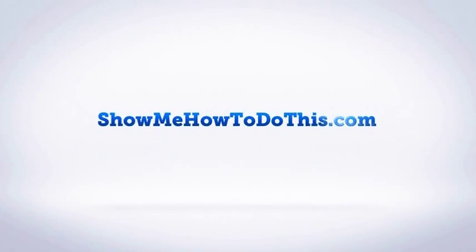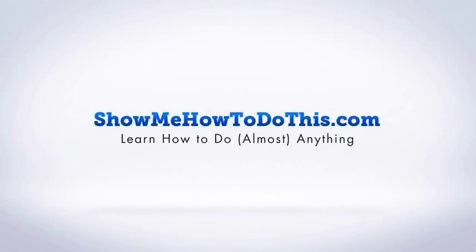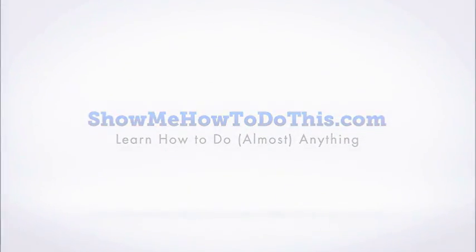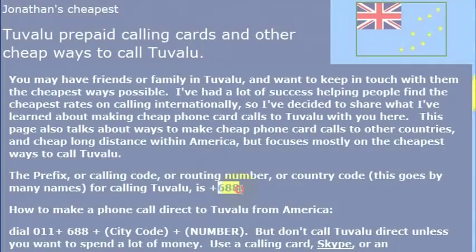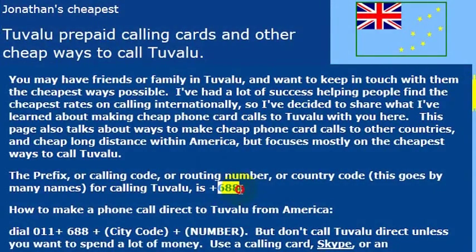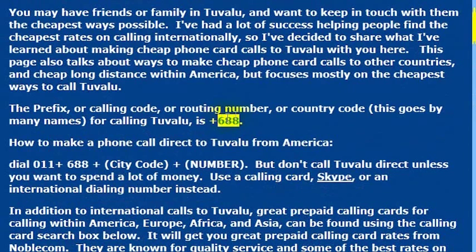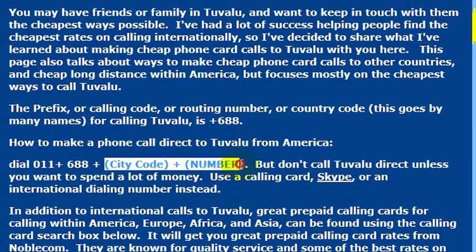To reach Tuvalu from the United States, you can simply call with the country code. What you need to do is dial 011, which gets you an international dialing line, then 688, which is the country code for Tuvalu, and then the city code and the number.